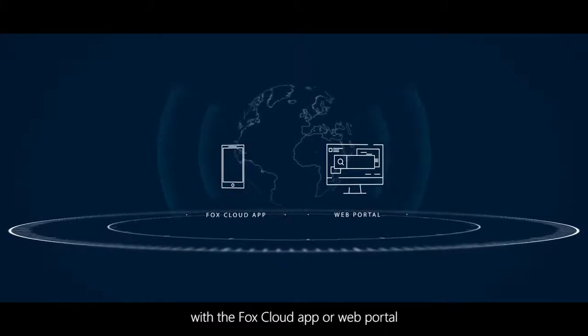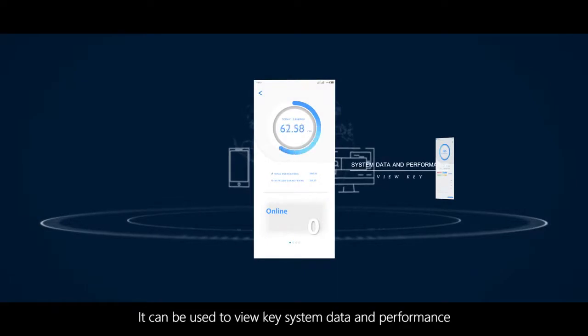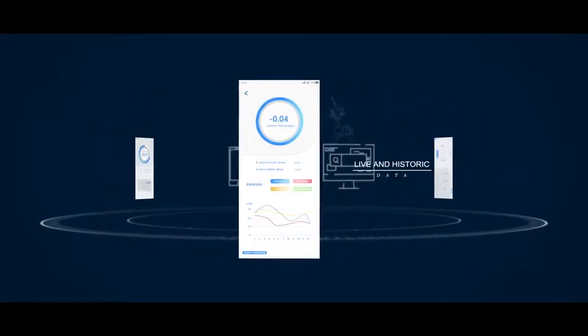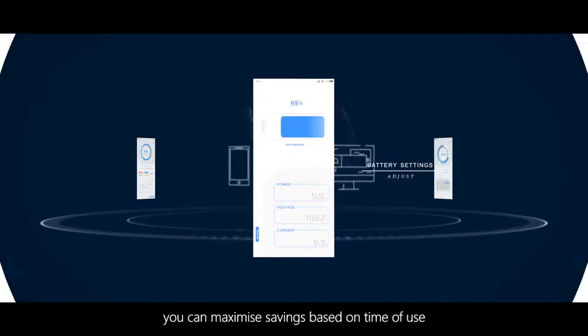Easily monitor system performance anywhere in the world with the Fox Cloud app or web portal. It can be used to view key system data and performance, both live and historic, and also to adjust battery settings so that you can maximize savings based on time of use.